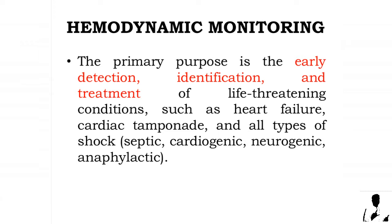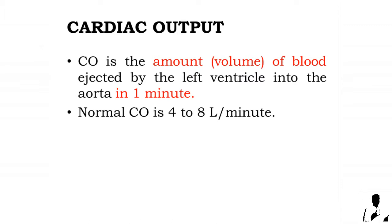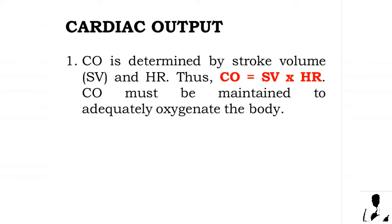Types of shock include septic, cardiogenic, neurogenic, and anaphylactic. Cardiac output is the volume of blood ejected by the left ventricle into the aorta in one minute. Normal cardiac output is 4 to 8 liters per minute. Cardiac output is determined by stroke volume and heart rate, thus cardiac output equals stroke volume times heart rate.